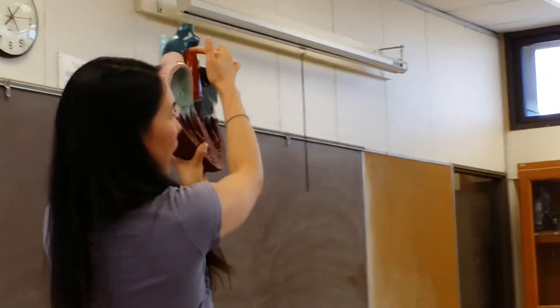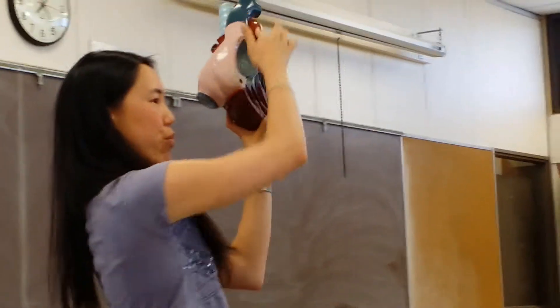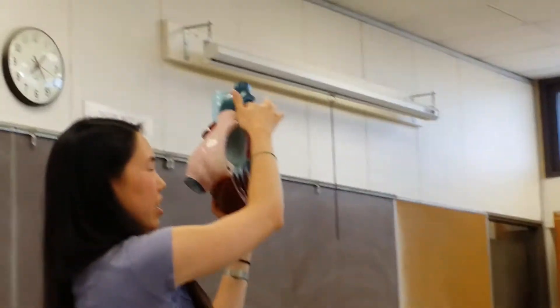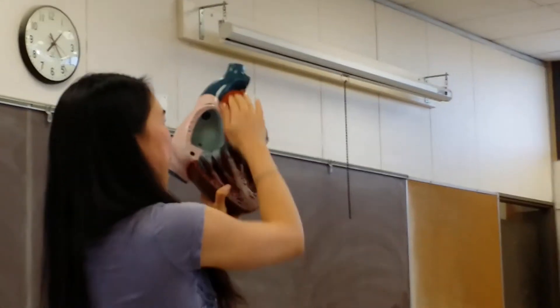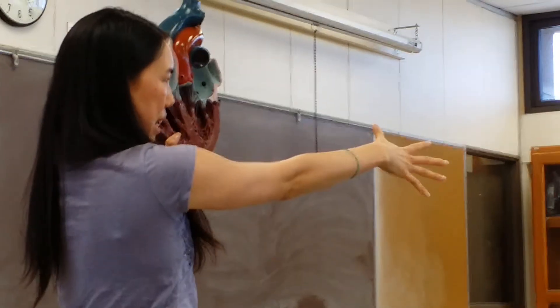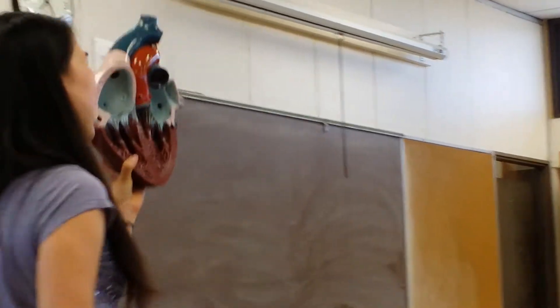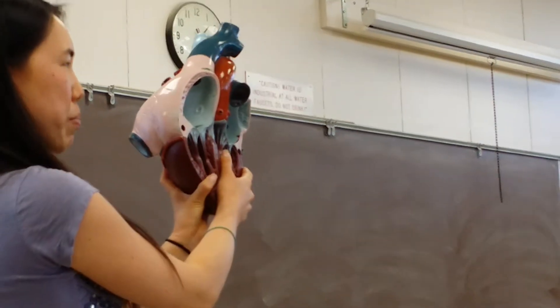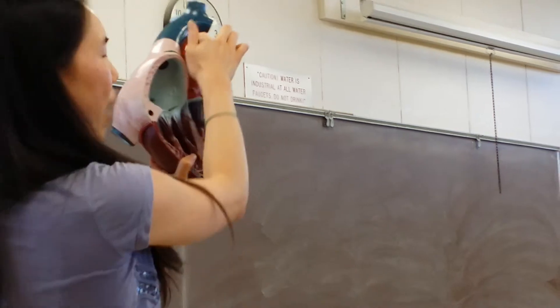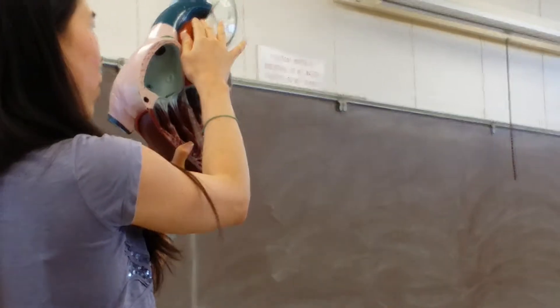which is this nice, bright, red, big vessel right here. And then from the aorta, we go to the rest of the body. Now, you might notice on your model, so you have the aorta coming out, nice and red, oxygenated, going through your entire body.